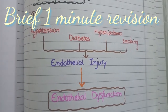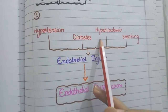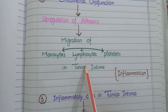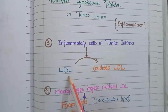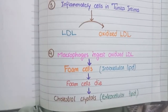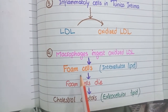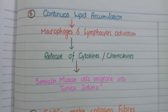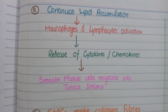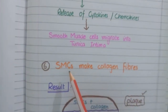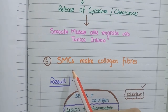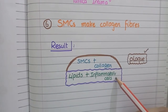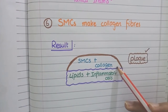To summarize the pathogenesis: risk factors such as hemodynamic disturbances, hyperlipidemia, and smoking cause endothelial dysfunction, which causes migration of leukocytes into the tunica intima (inflammation). This causes oxidation of LDL; macrophages ingest oxidized LDL and become foam cells, and some foam cells die releasing lipid as cholesterol crystals. Continuous lipid accumulation triggers cytokine release, causing smooth muscle cell migration from tunica media into tunica intima, where they produce collagen forming the superficial fibrous cap of the atherosclerotic plaque.